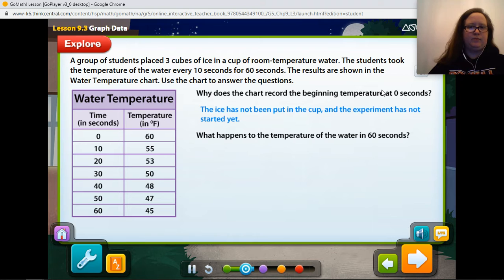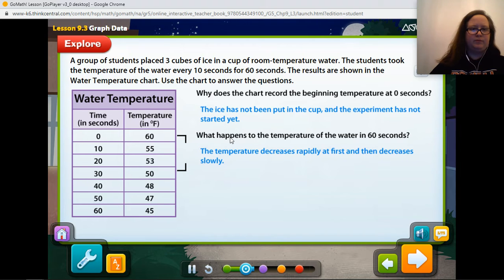What happens to the temperature of the water in 60 seconds during the experiment? The temperature decreases rapidly for the first 30 seconds and decreases slowly during the remaining time. How much does the temperature decrease in the first 30 seconds? So, from 0 to 30, we went from 60 degrees to 50 degrees. The temperature decreases from 60 degrees to 50 degrees or 10 degrees in the first 30 seconds.